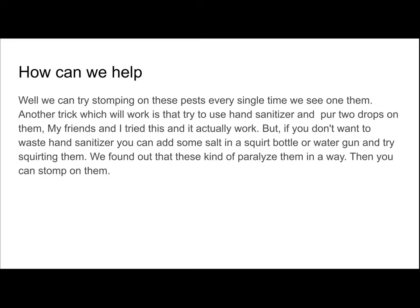So how can we help? While we can try stomping on these pests every single time we see them, another trick that works is to use hand sanitizer and pour two drops on them. My friends and I actually tried this and it worked. But if you don't want to waste any precious hand sanitizer, you can add some salt in a squirt bottle or water gun and try squirting them — we found out that this kind of paralyzes them. Then you can stomp on them. Thank you for watching, make sure to subscribe. See ya, bye.